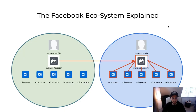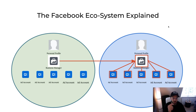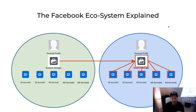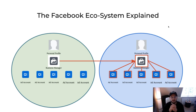Let's hop back into the video. This is method number one. What the client basically does is they add your business manager as a partner by adding your business manager ID. Because you get access to their business manager, they can select that you also get access to their ad accounts, their pixels, their dynamic product catalogs, and so on — everything you need is beneath their business manager.